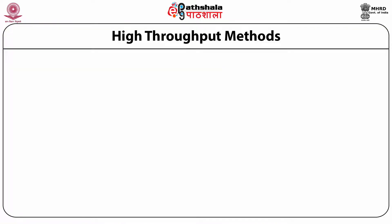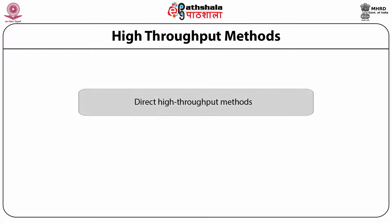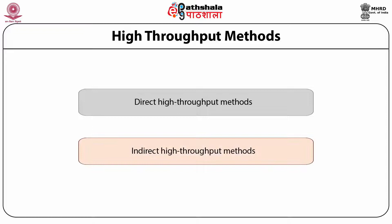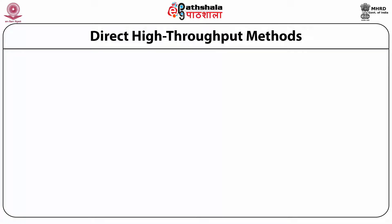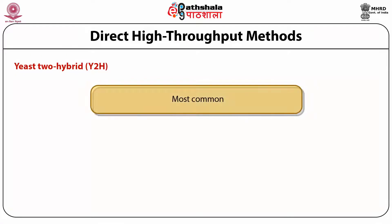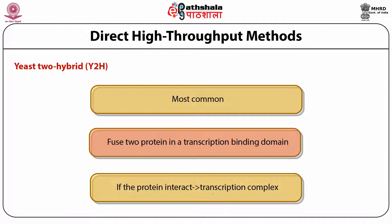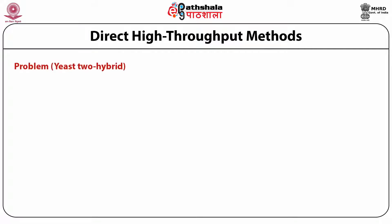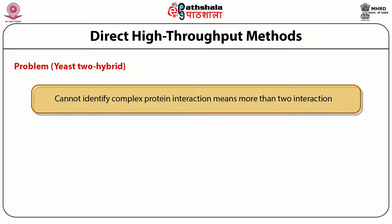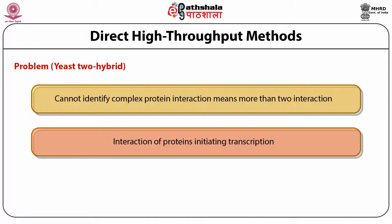High-throughput methods include direct and indirect approaches. Direct high-throughput methods use the two-hybrid system, the most common method, which fuses two proteins to transcription binding domains — if the proteins interact, the transcription complex is activated. A problem with direct high-throughput methods is that they cannot identify complex protein interactions involving more than two proteins, and another issue is interactions of proteins that initiate transcription themselves.